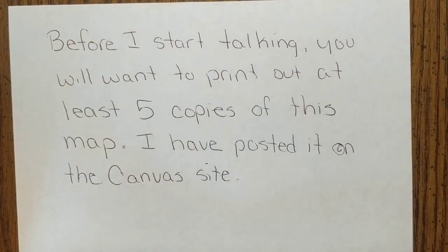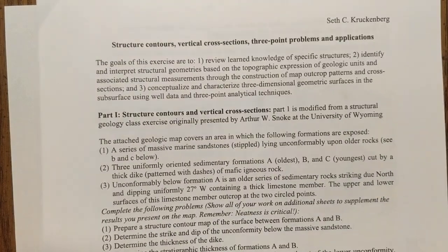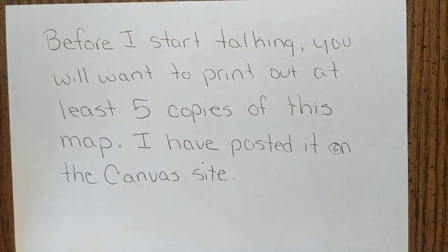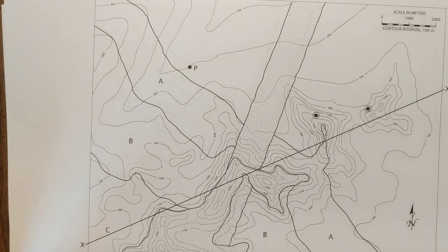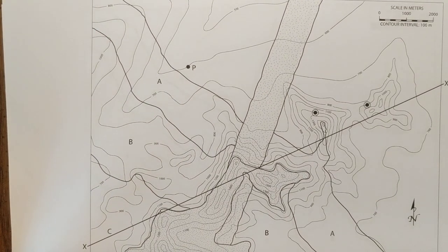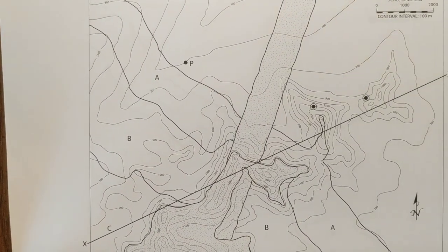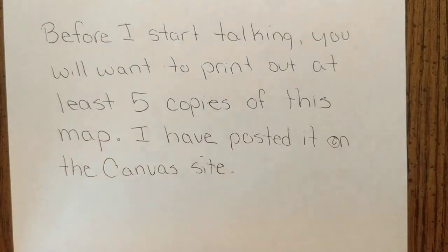We're going to be going over part one of the homework handed out during class: structure contours, vertical cross sections, and three-point problem applications. Before you start, please make sure you have at least five copies of the attached map. There are a lot of three-point problems we're going to be doing, and if you can separate each problem by itself it will make it easier to interpret your final product.